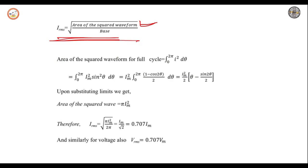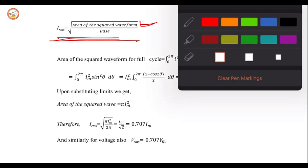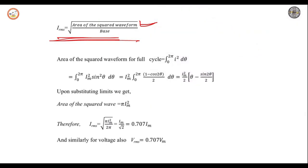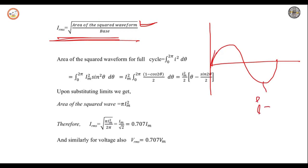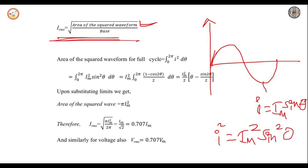Initially we have a sinusoidal current. The value is I = Im sin θ — sinusoidal current. When you square this value, I² = Im² sin²θ. So I² is equal to Im² sin²θ.